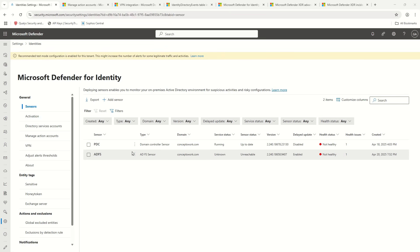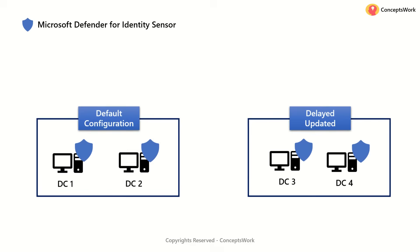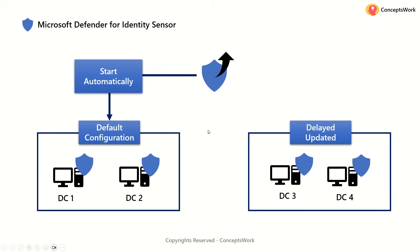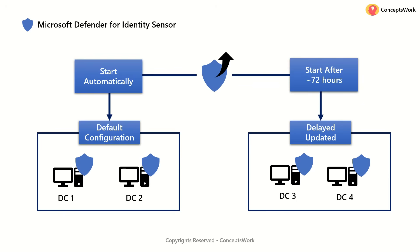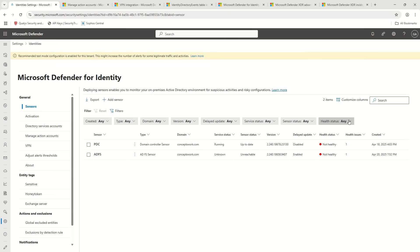The difference is this: whenever an update is released for MDI, servers with default configuration will start those updates automatically on that machine. However, for machines in a delayed update state, those updates will be applied after 72 hours. So you can choose your servers to be in default configuration or in delayed update state, where the sensor on that machine will get updated after 72 hours.